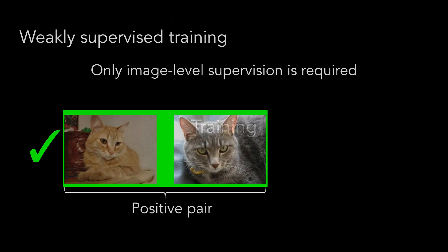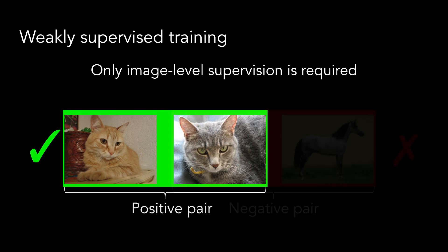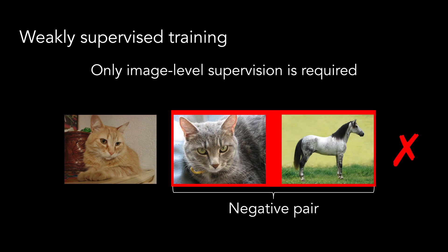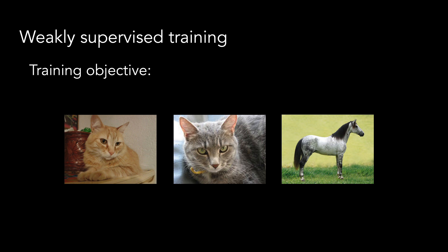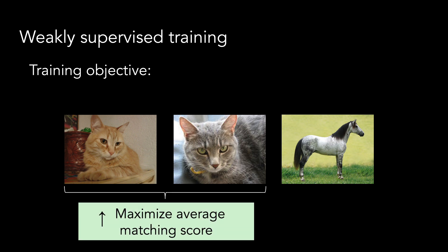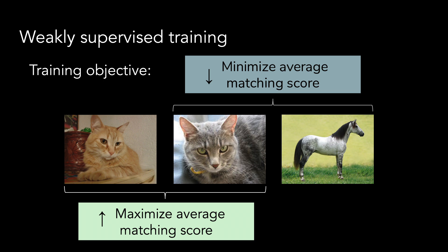For training, we adopt the weakly supervised approach of NC-Net, where supervision is given at the level of positive and negative image pairs. Positive pairs contain images where correspondences are expected to exist, while negative pairs contain images where no correspondences are expected to exist. Then, the training objective maximizes the average matching score for positive pairs and minimizes the average matching score for negative pairs.